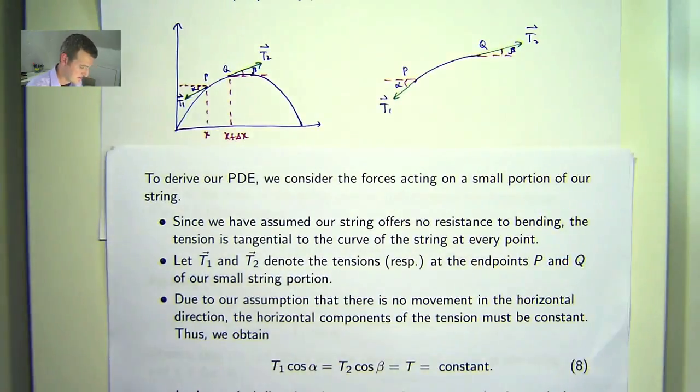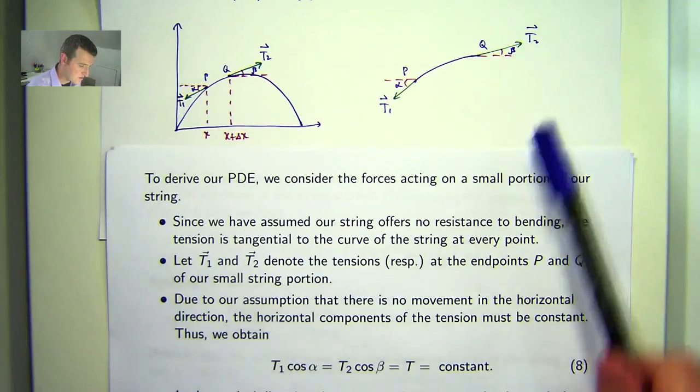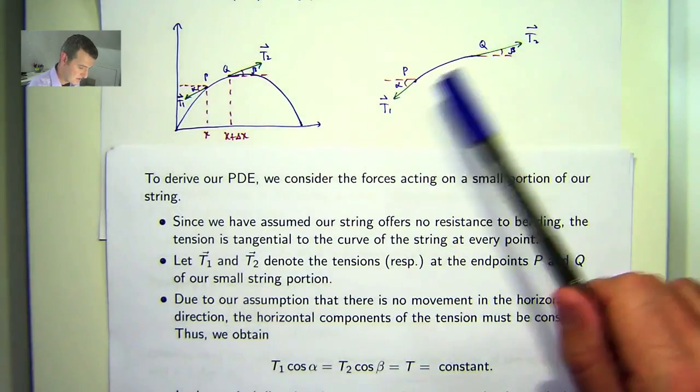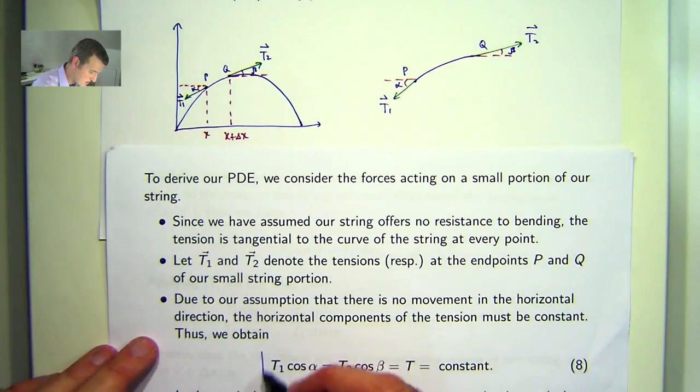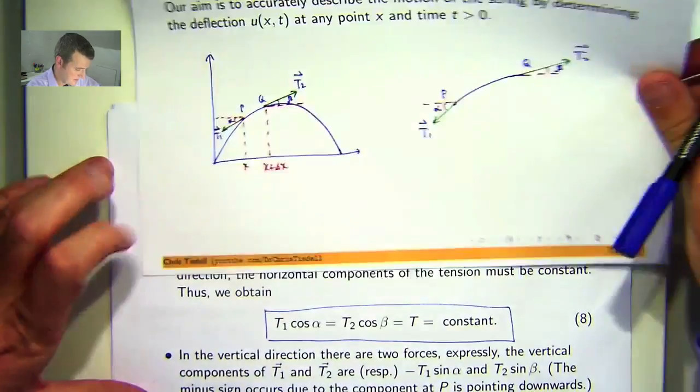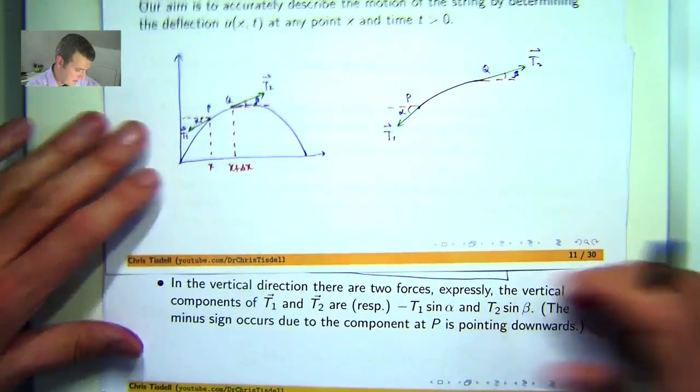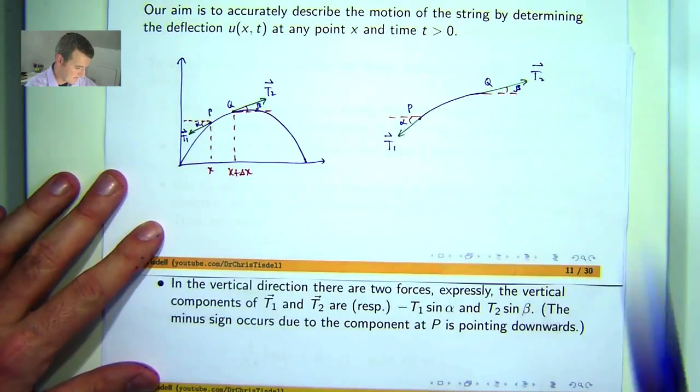Due to the assumption that there's no side to side movement, only up and down, the horizontal components of these forces must be constant. With a little bit of trig, you can show that these two expressions are equal to a joint constant value.